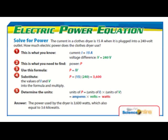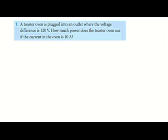So let's look at an example problem. The toaster oven is plugged into an outlet where the voltage difference is 120 volts. How much power does the toaster oven use if the current in the oven is 10 amps?